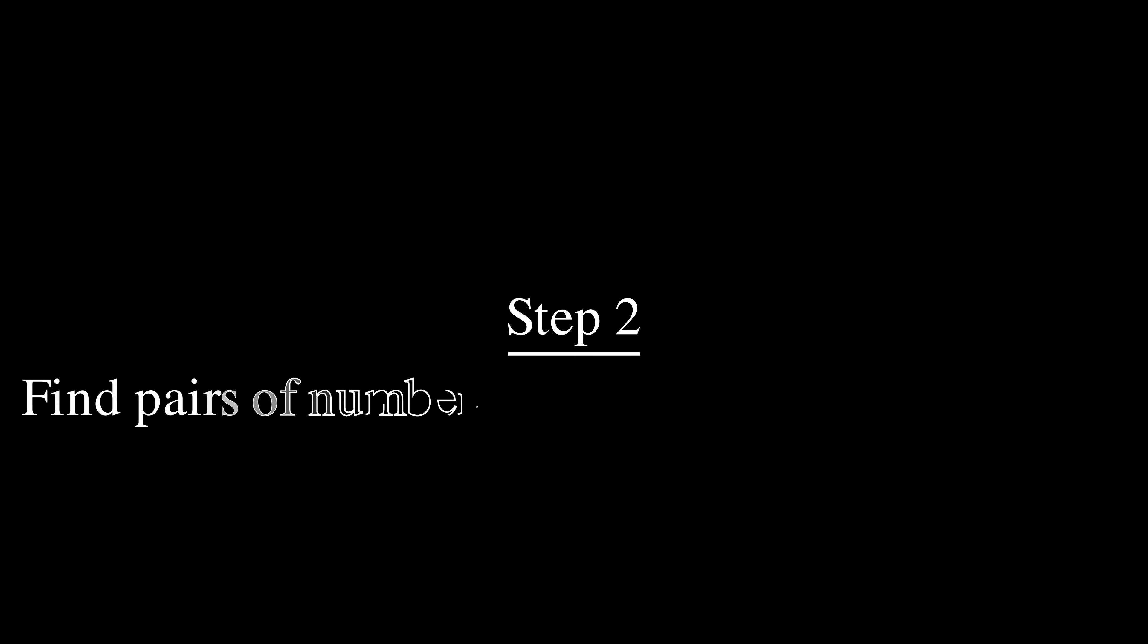Step two is to try to find all of the pairs which multiply to this number. Now it turns out you don't really need to find all of them but go ahead and write down as many numbers as you can that multiply to the magenta value for now. Pause the video and resume when you're ready to continue.